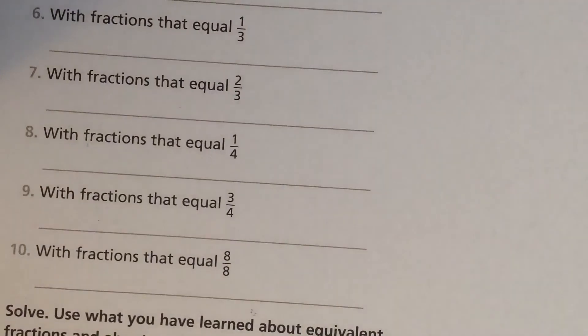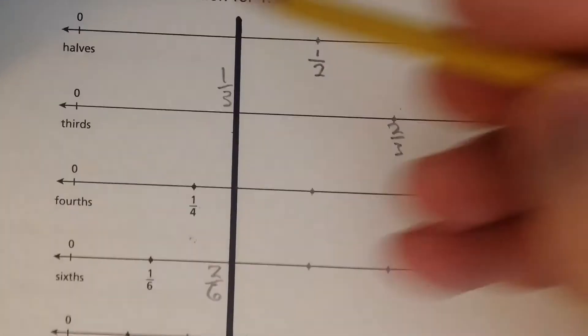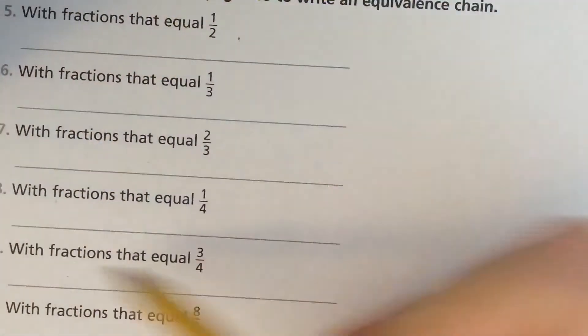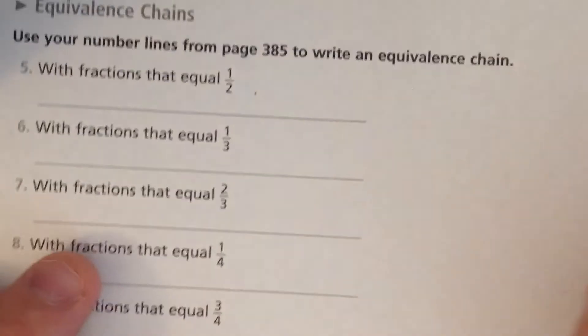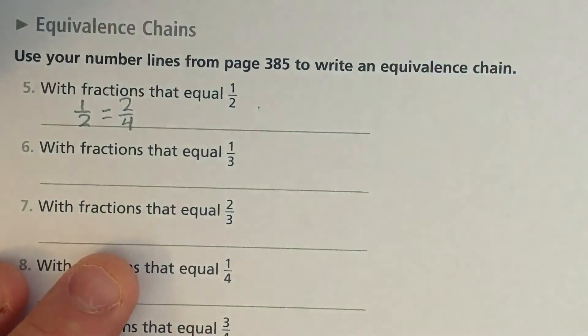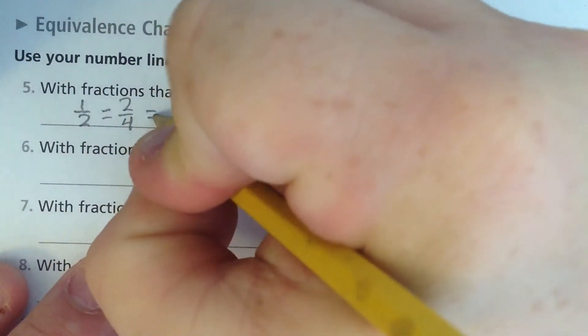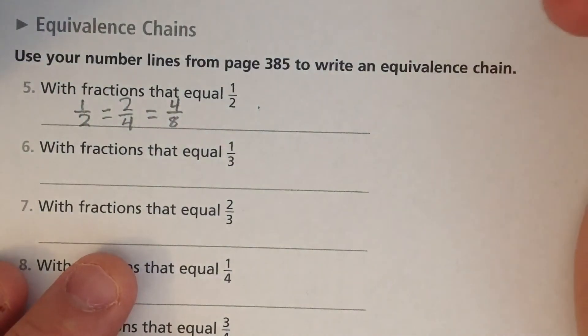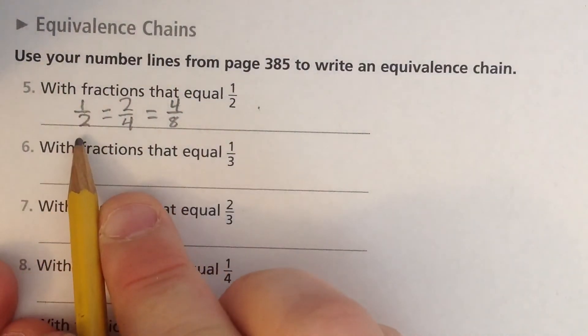And now you're going to use this part here to help you with this part here. What are the fractions that are equal to one-half? Well, we already did that. One-half equals two-fourths. That makes sense because two is half of four. Equals four-eighths. That makes sense because four is half of eight. This is called an equivalence chain.